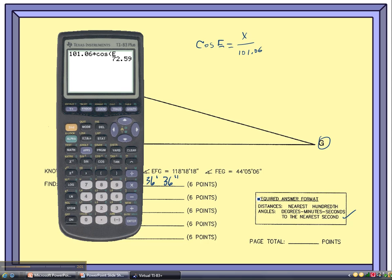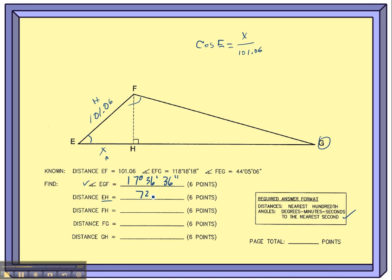Okay. And it's already rounded for me, so 72.59. That's what I'm going to write in the blank. 72.59.